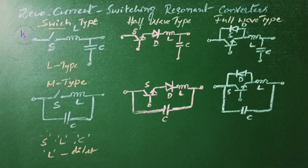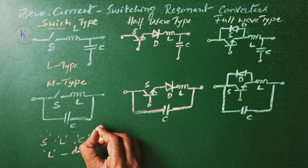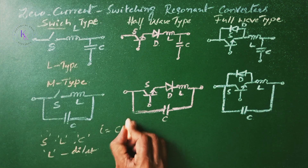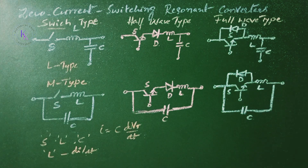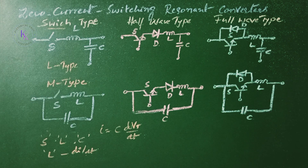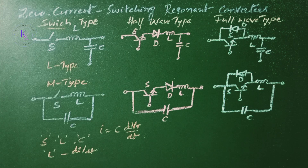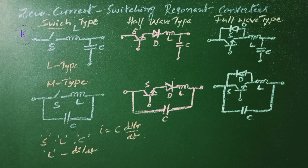When the switch current is zero, there will be a current I equals C·dVt/dt flowing through the internal capacitance due to a finite slope of the switch voltage at turn-off. This current flow will cause power dissipation in the switch and limits the high switching frequency.